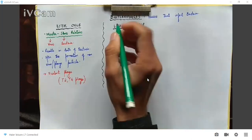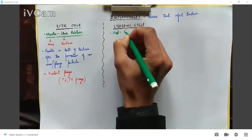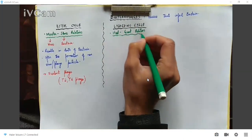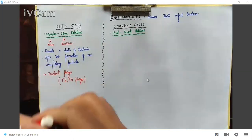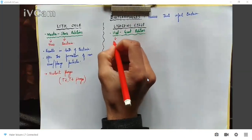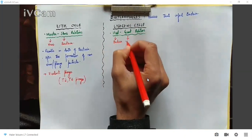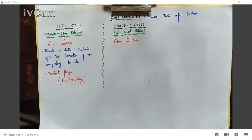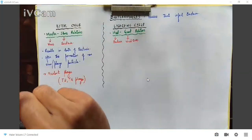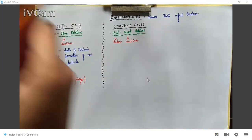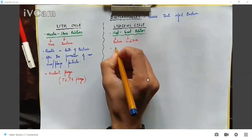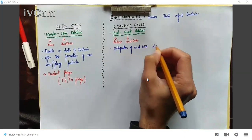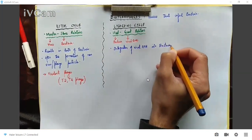If we talk about the lysogenic cycle, this is called a host-guest relationship. In the lysogenic cycle, your viral DNA is integrated into the bacterial DNA. The integration of viral DNA into bacterial DNA occurs, and the virus's DNA is carried along by the bacterium.